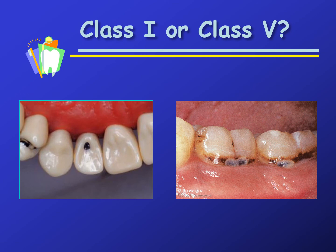Two classes that tend to get mixed up are the lingual pit, which is a class one, and the gingival class five. The class five is in the gingival third, and so is the lingual pit. However, you have to distinguish whether it started on a smooth surface or in a pit. Starting in a pit is class one; starting on a smooth surface in the gingival third of the facial or lingual would be class five.